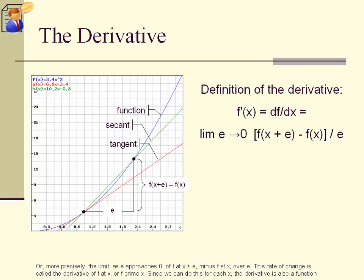Or, more precisely, the limit, as e approaches 0, of f at x plus e, minus f at x, over e. This rate of change is called the derivative of f at x, or f prime x. Since we can do this for each x, the derivative is also a function of x.